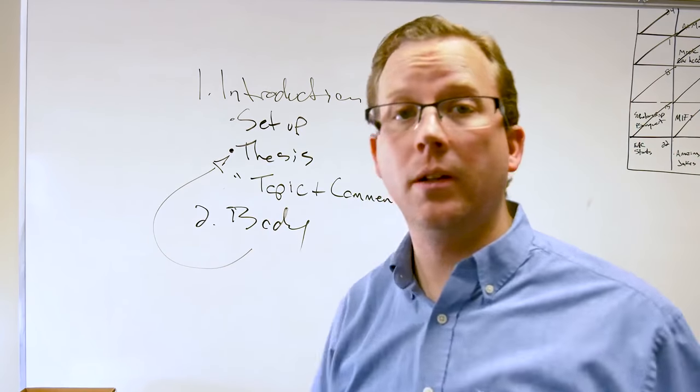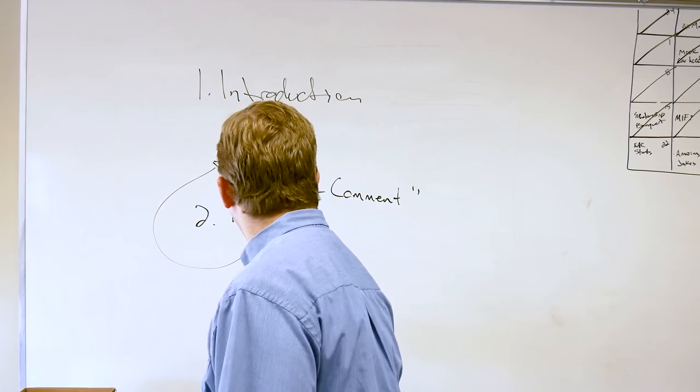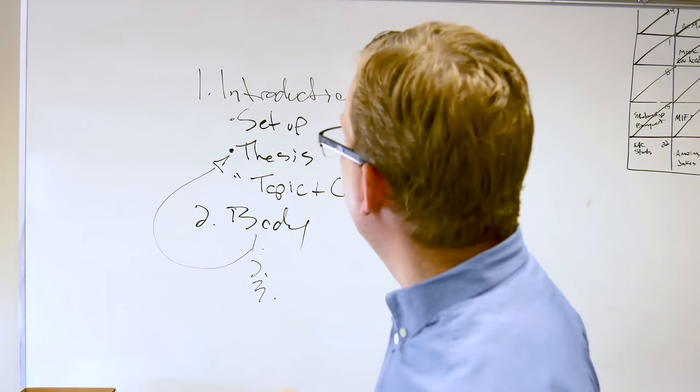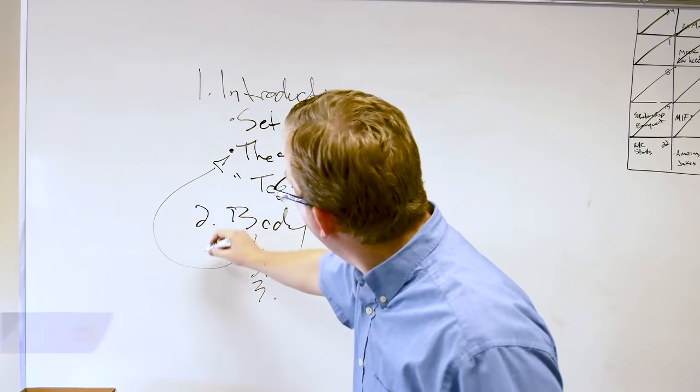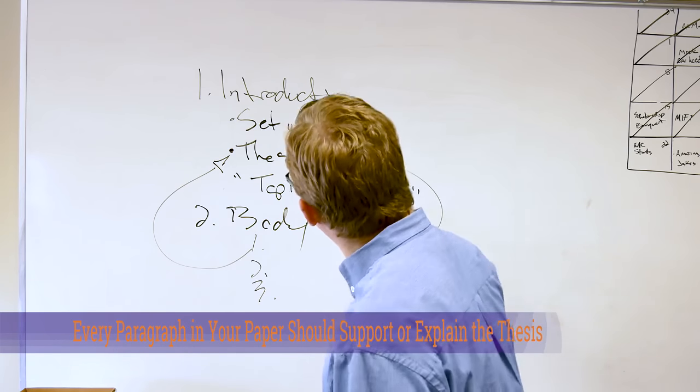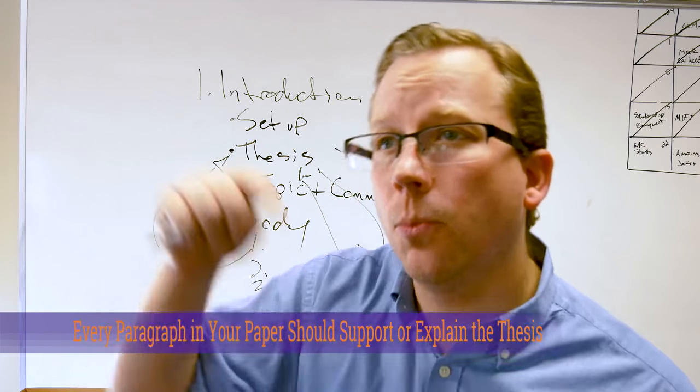So if your thesis is, "And there's three ways it could have been avoided," well great, now you know three parts to your essay: part one, two, three. There's reason one, two, and three. Every single paragraph in your paper has to go back to proving the thesis statement. Why? Because that is the purpose of your paper.